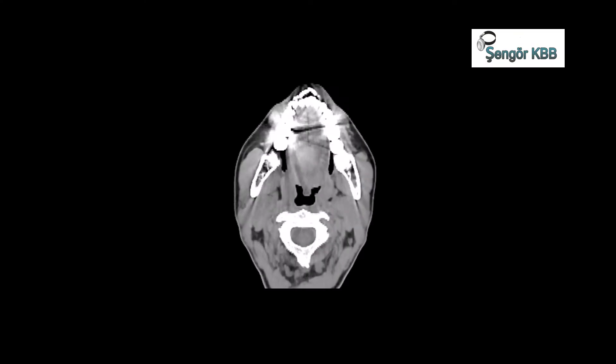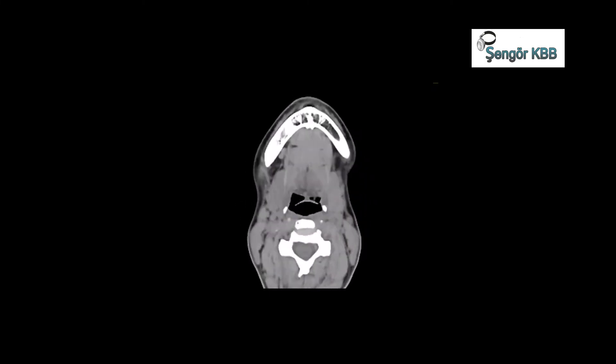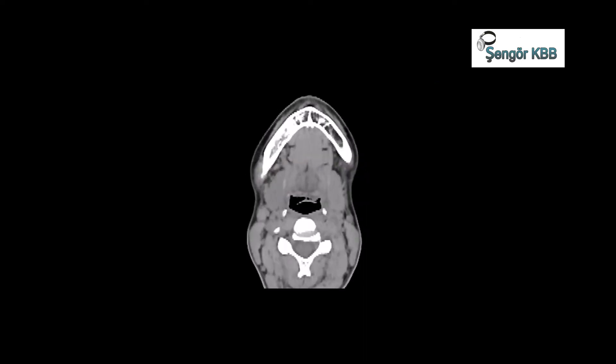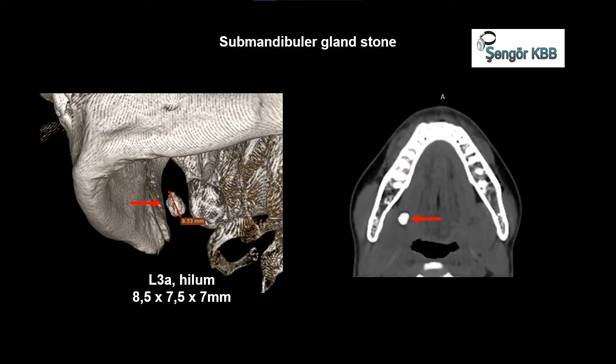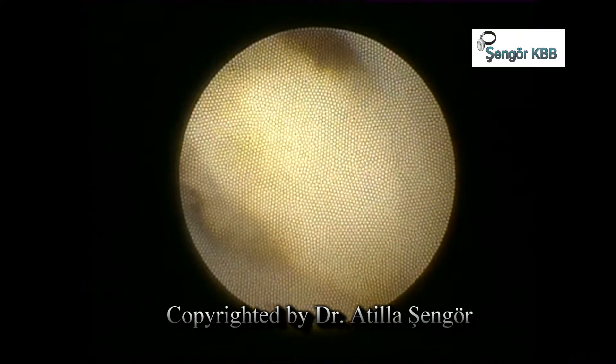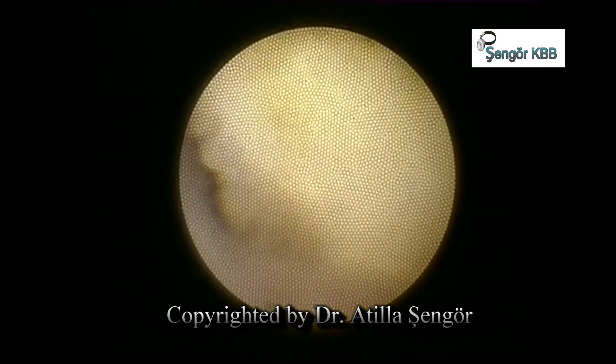Let's look at her tomography. You can see the stone in white color, medially to the right jaw bone. This is the 3D tomography image. It's obvious how deep the stone is located in the hilum. And this is the operation video. The stone was stuck 6 cm deep from the ductal orifice.